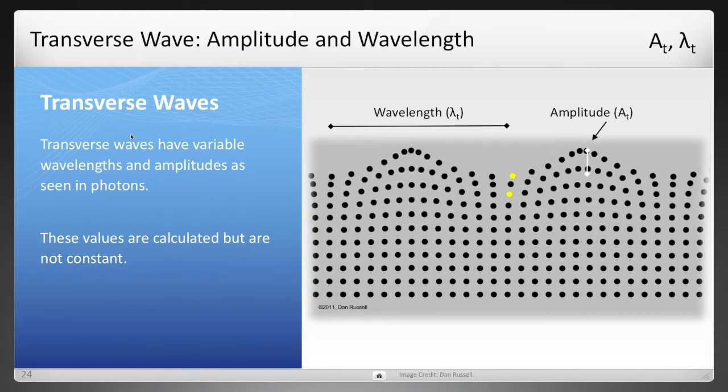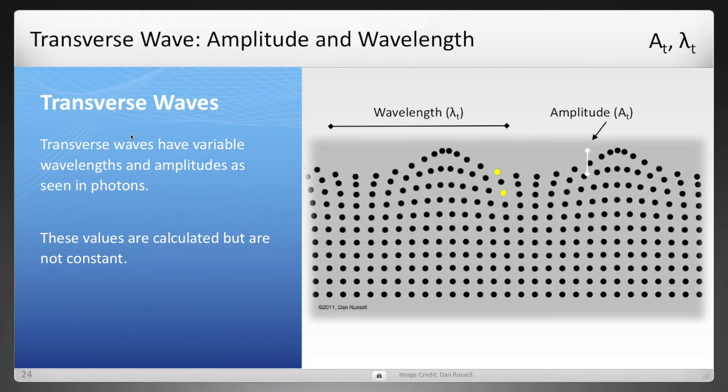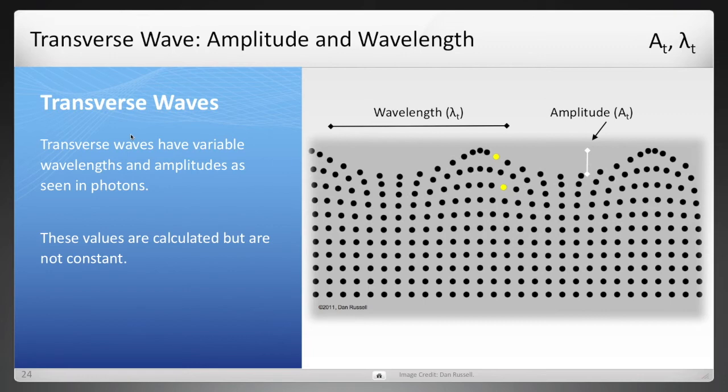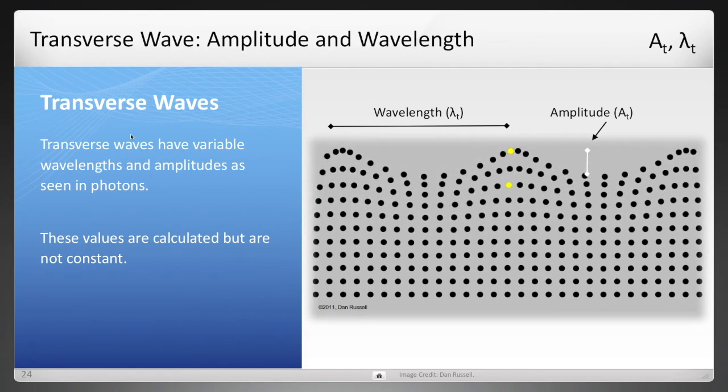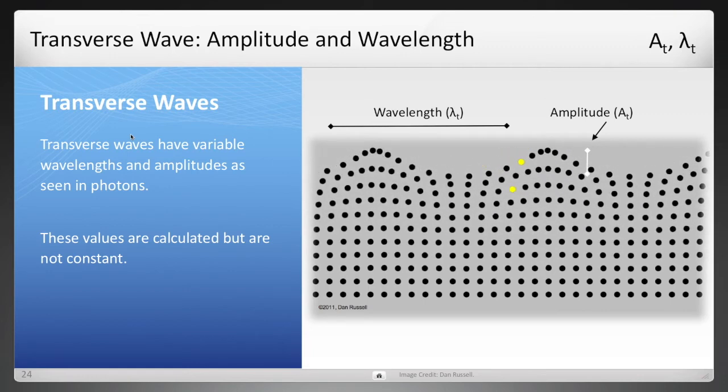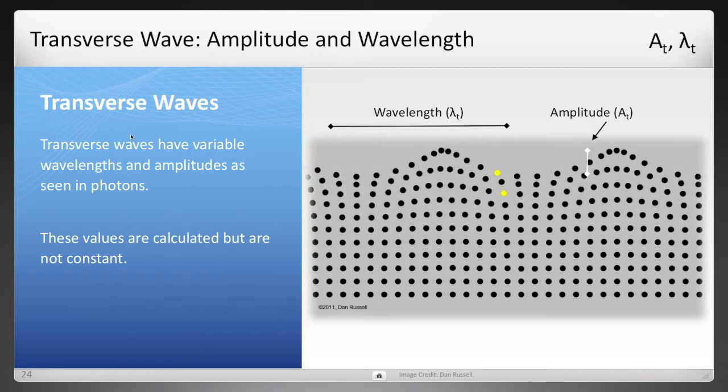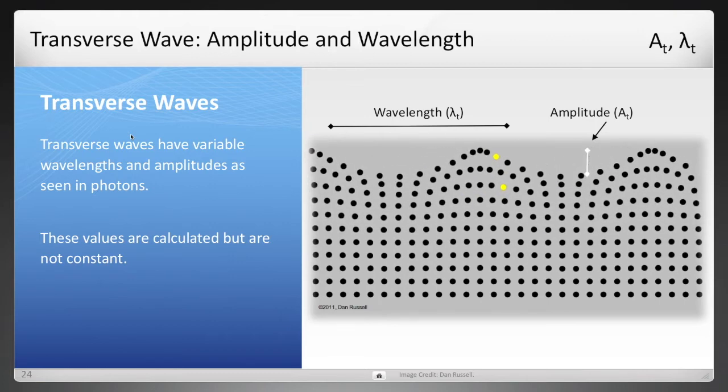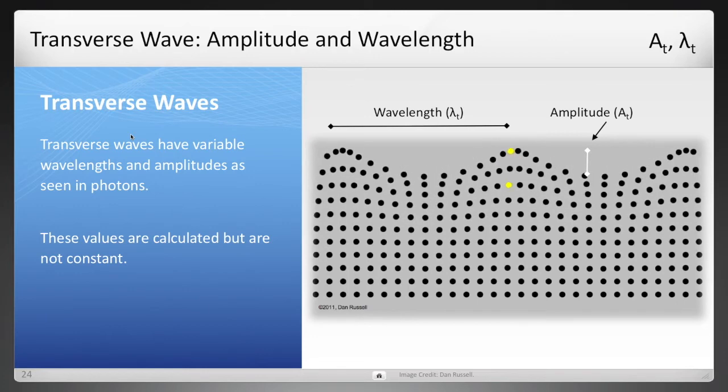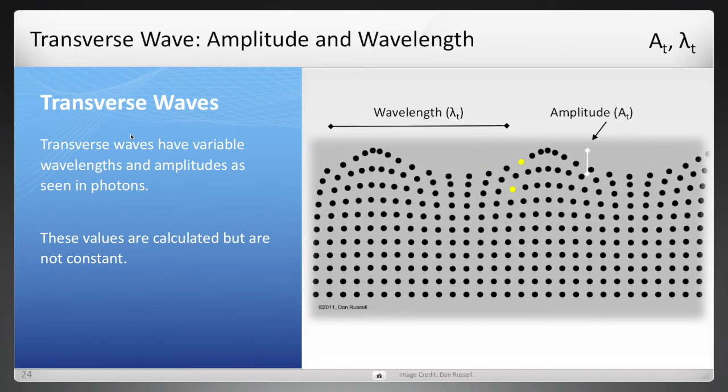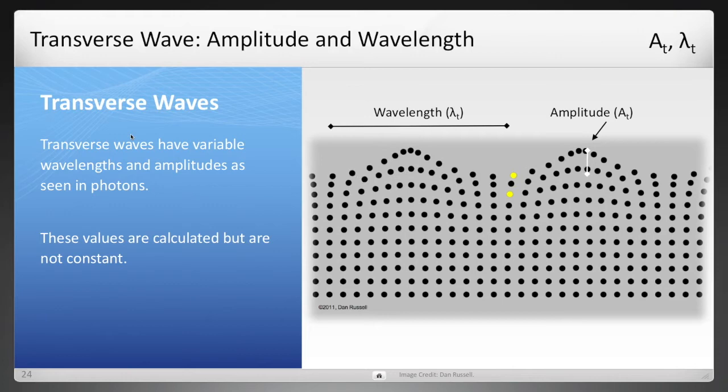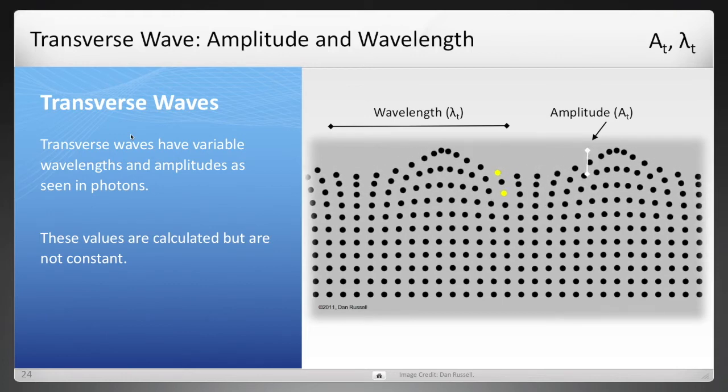And back to a transverse wave now. Here you see the amplitude of the transverse wave is perpendicular now to the direction that it's moving. You can see wavelength and amplitude. The photon, which we discussed in another video, is a transverse wave. And this wavelength can change, and also amplitude can change as well.